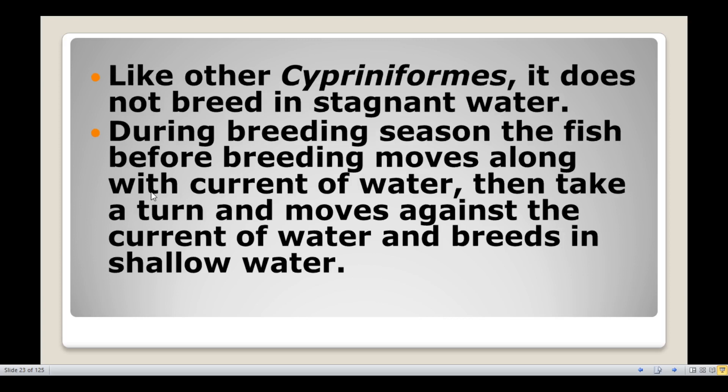Like other cypriniformes, it does not breed in stagnant waters. During the breeding season, before breeding, the fish moves along the current of water, then takes a turn, reverses, and moves against the current of water. It breeds in shallow waters.